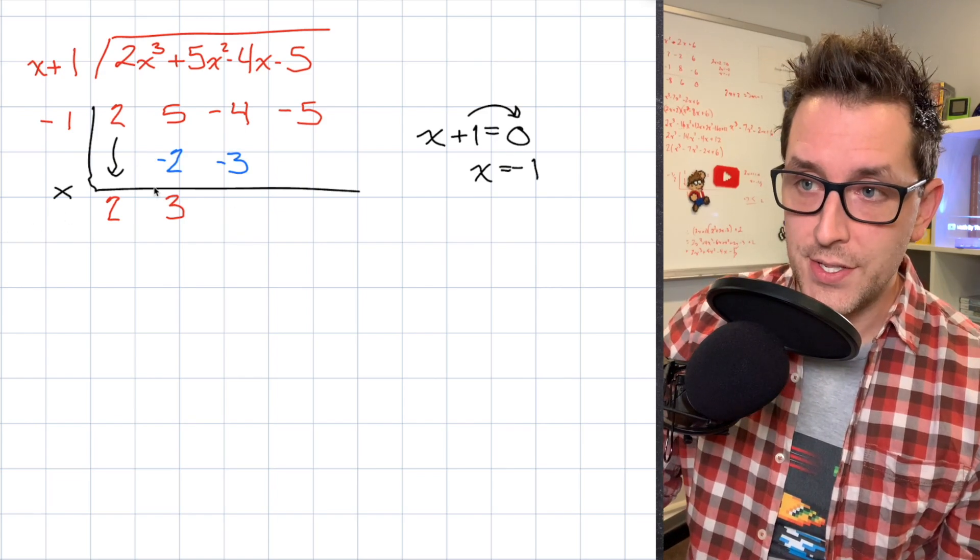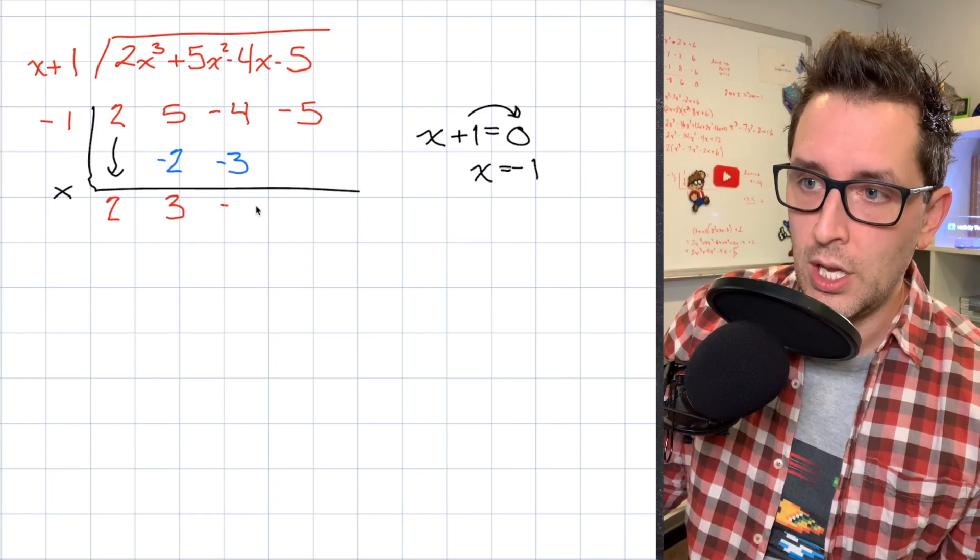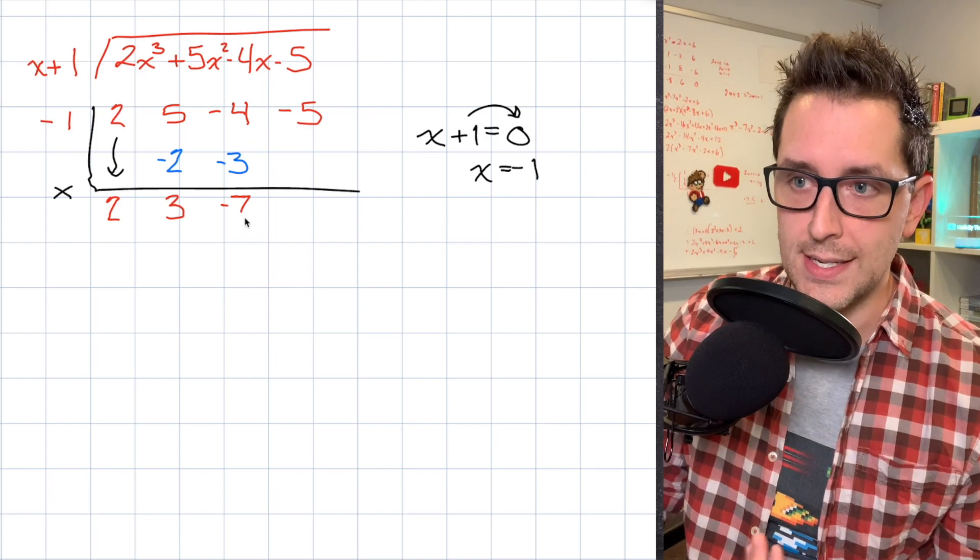And just like in the last step, I want to add straight down and place the result underneath. Okay, so negative 4 plus negative 3 is negative 7.